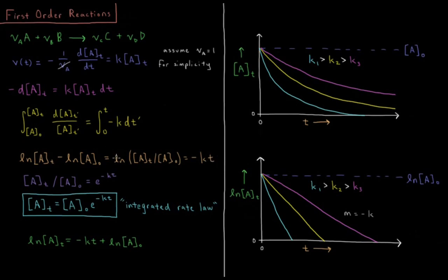Take both sides to the power of e. We have the logarithm cancels, A(t) over A naught equals e to the minus kt. Multiplying both sides by A naught, we have that the concentration of our reactant A as a function of time equals the initial concentration of A times e to the minus rate constant times time.